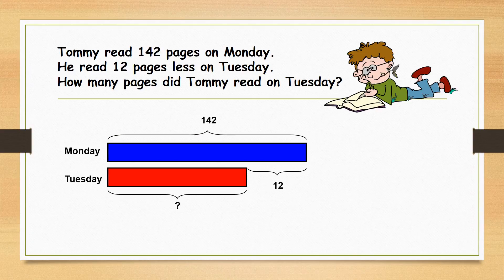From the model below, it shows that on Tuesday there are 12 fewer pages compared to Monday, which is 142 pages. To find how many pages Tommy read on Tuesday, we simply find the difference.